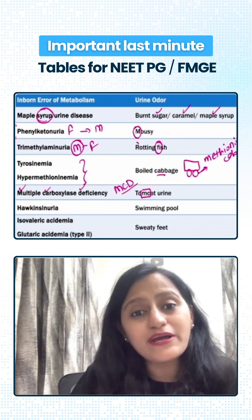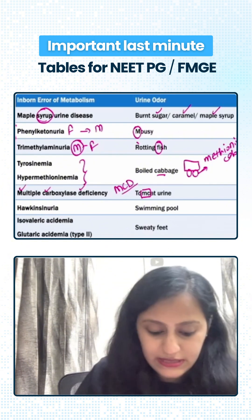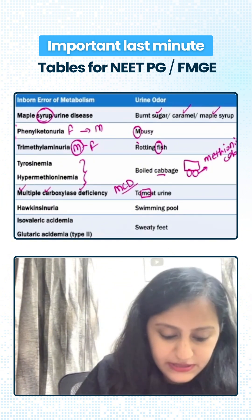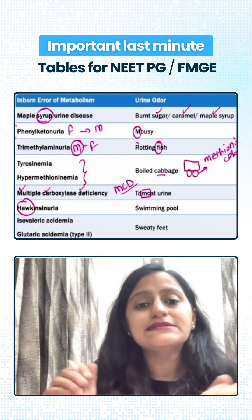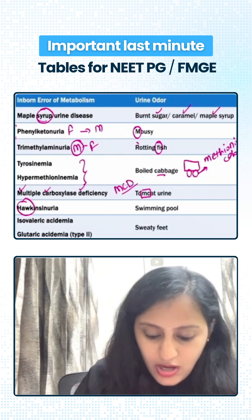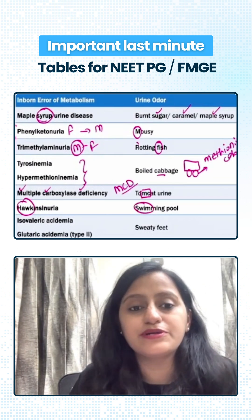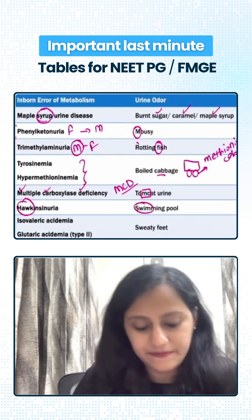Then you have hawkinsuria, which has swimming pool odor. Imagine a bird — hawk — swimming in the swimming pool. So hawk is swimming in the pool, and swimming pool odor is hawkinsuria.